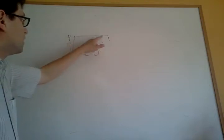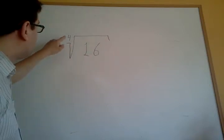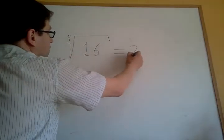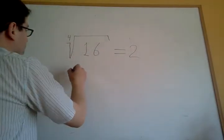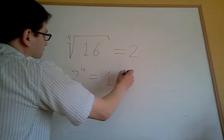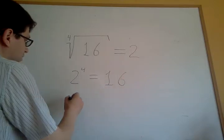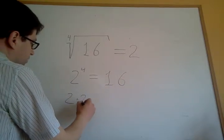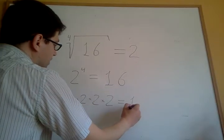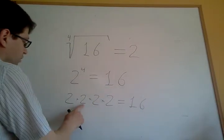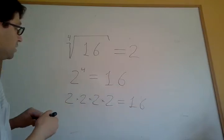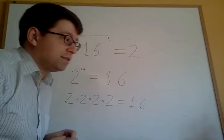What is this? This is a radical — the 4th root of 16. It also equals 2, because 2 to the power of 4 equals 16. 2 times 2 times 2 times 2 equals 16: 2 times 2 is 4, 4 times 2 is 8, 8 times 2 is 16. So that's what a radical is.